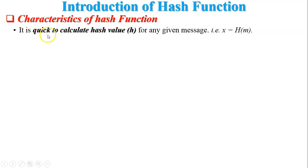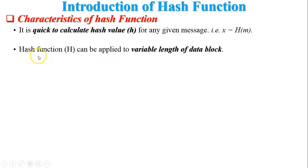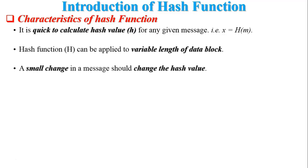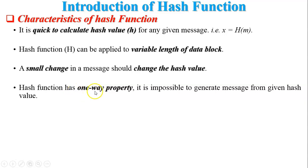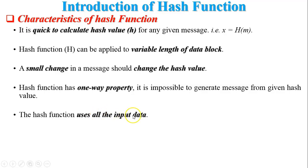Characteristics of hash functions: First, it is quick to calculate the hash value h for any given message M — x = H(M). Second, a hash function can be applied to a variable length data block. Third, a small change in a message should change the hash value — this property is mostly used to check or verify the integrity of the message at the receiver side. Fourth, the hash function has a one-way property — it is impossible to generate the original message from a given hash value, so an attacker who obtains the hash cannot retrieve the original message.